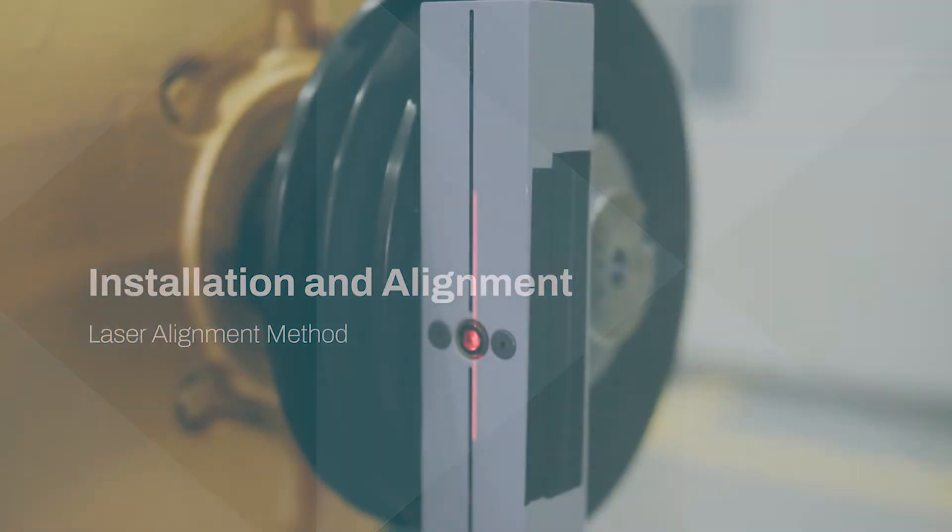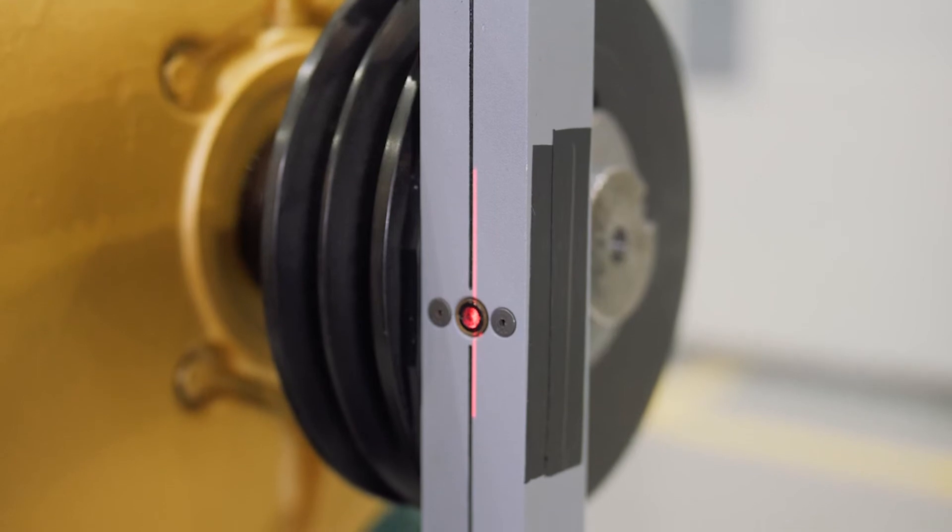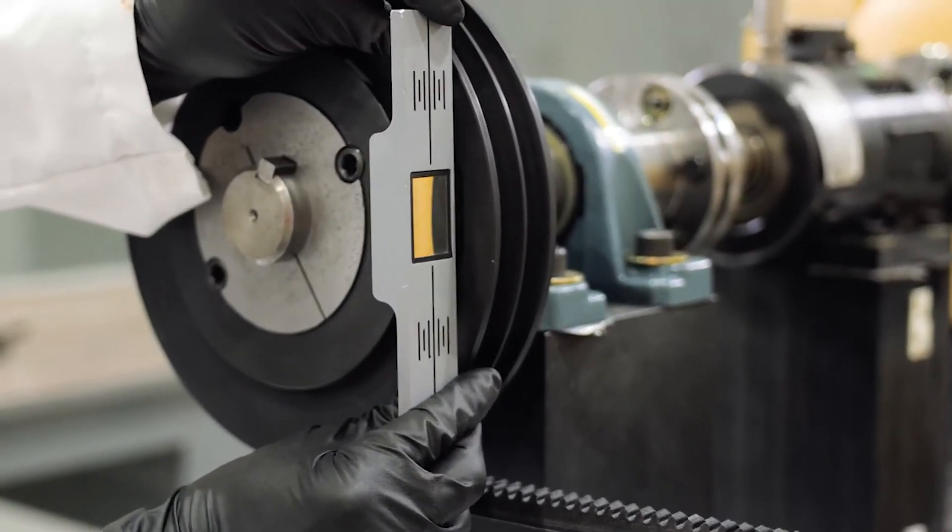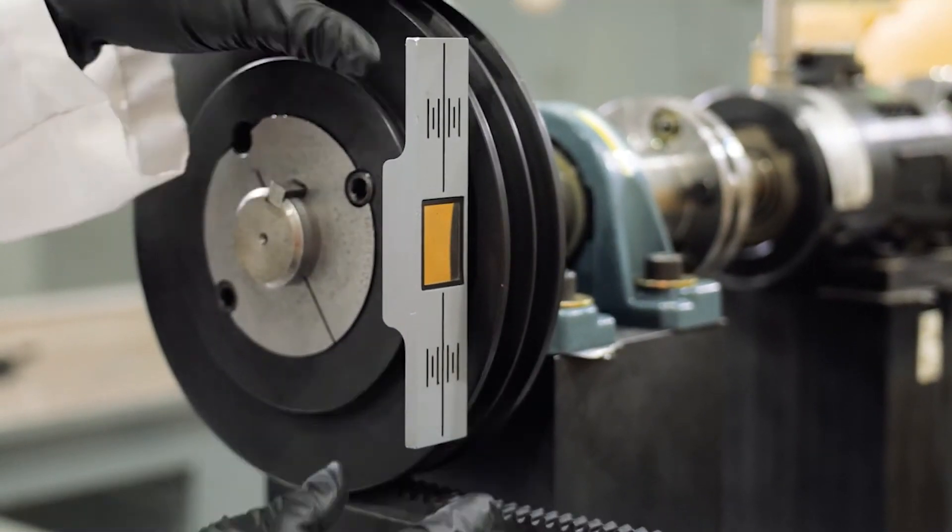Now we will align the belt drive using the laser alignment method. Laser alignment is typically more accurate than straightedge alignment.